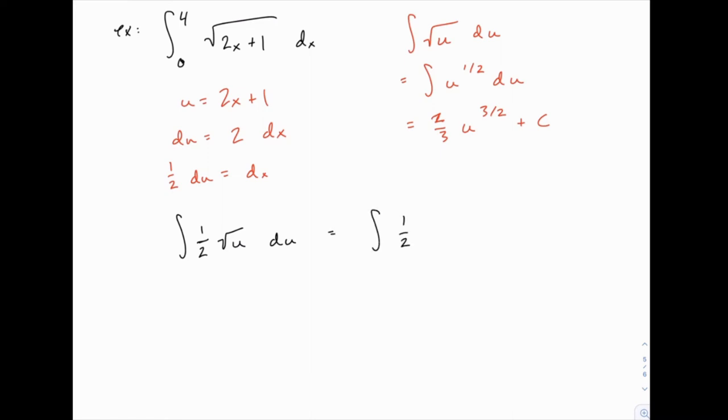We can also rewrite this as one-half u to the one-half. And then we know the answer for that antiderivative. That would be the one-half gets carried along for the ride, and then the u to the one-half gets replaced with two-thirds u to the three-halves. Now, of course, we can combine those fractions, one-half times two-thirds, the twos cancel, and we get one-third u to the three-halves plus c.